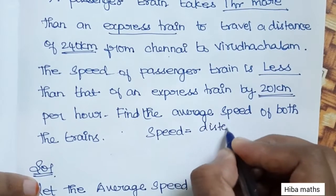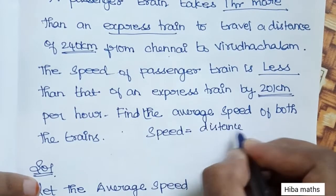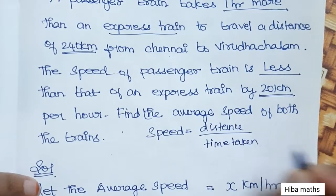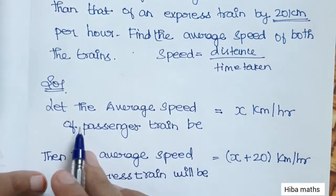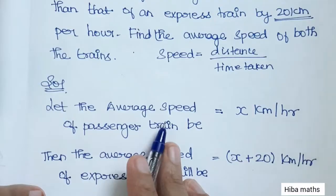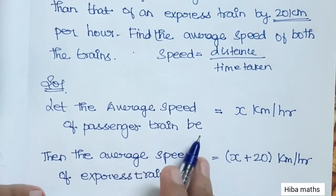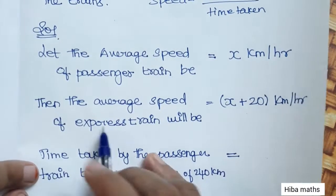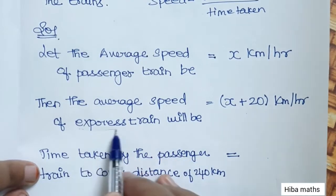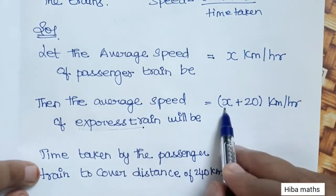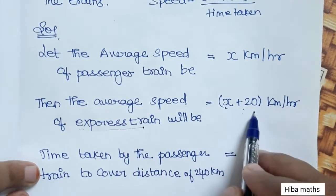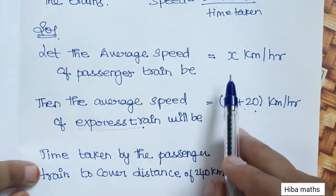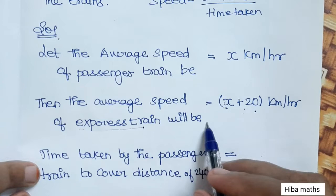Speed is distance divided by time. We can solve this. Let the average speed of the passenger train be x km per hour. That means the average speed of the express train is x plus 20.